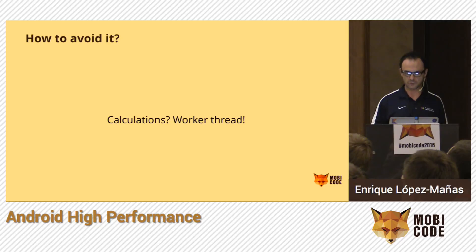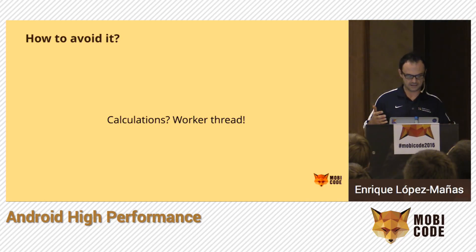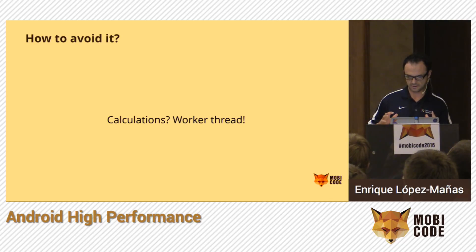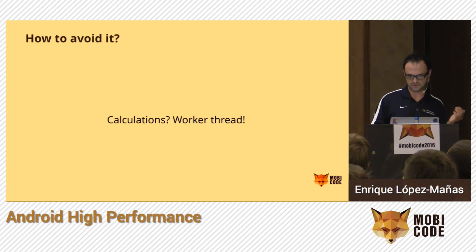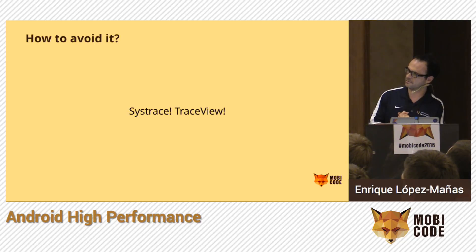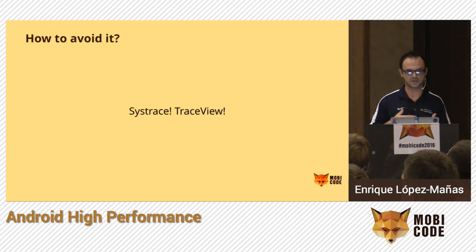If you're using long calculations, you should use a worker thread. Most people here will be using a proper architecture — MVP or similar patterns — and any long-running operation should always be performed on a worker thread. There are a few tools we can use to debug performance problems: Traceview and method tracing in Android.